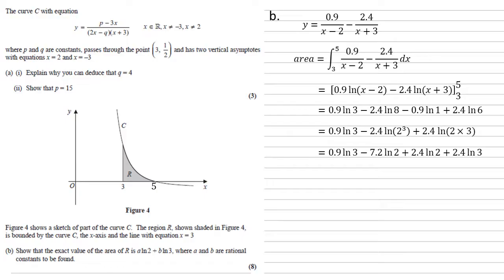Everything is now in terms of ln 2 and 3, so we can bring our like terms together. We end up with 3.3 ln 3 minus 4.8 ln 2.